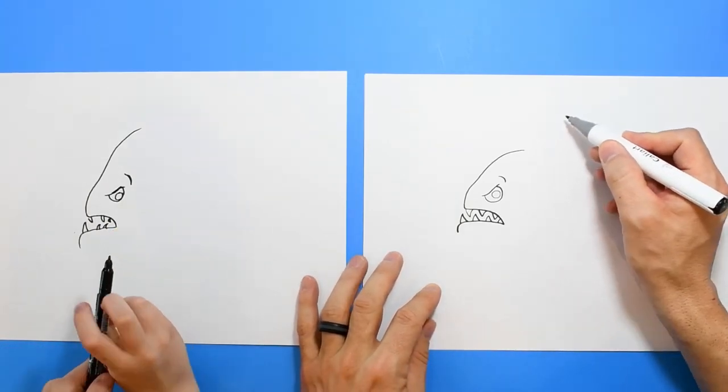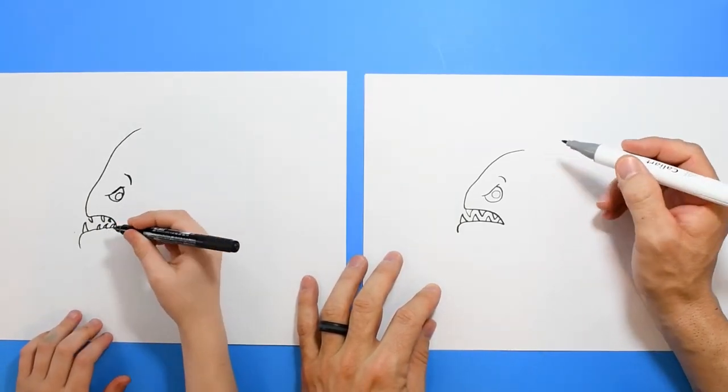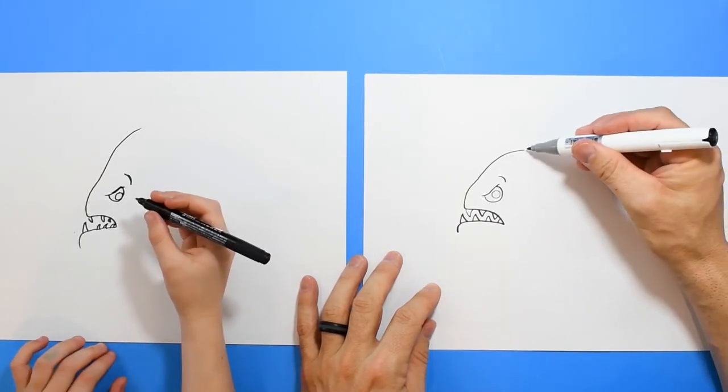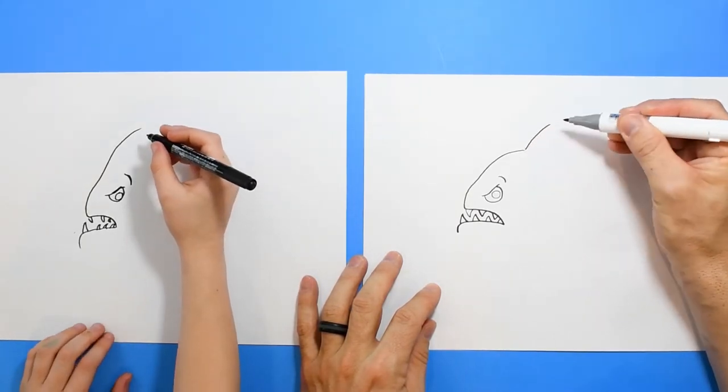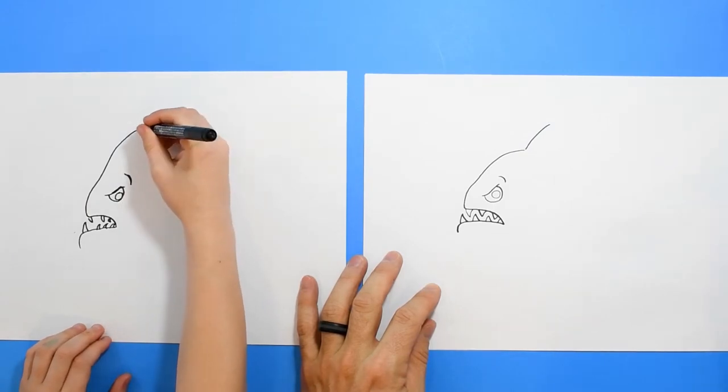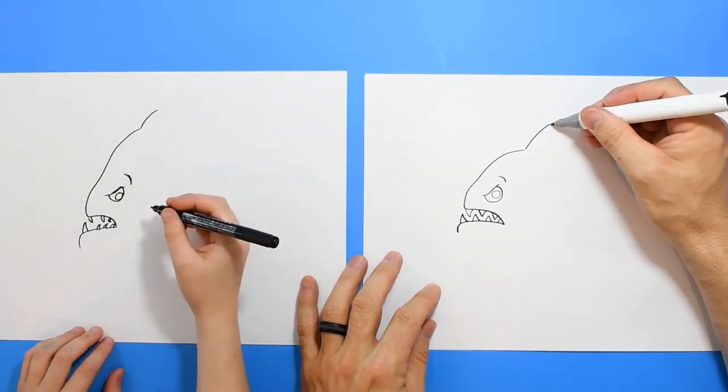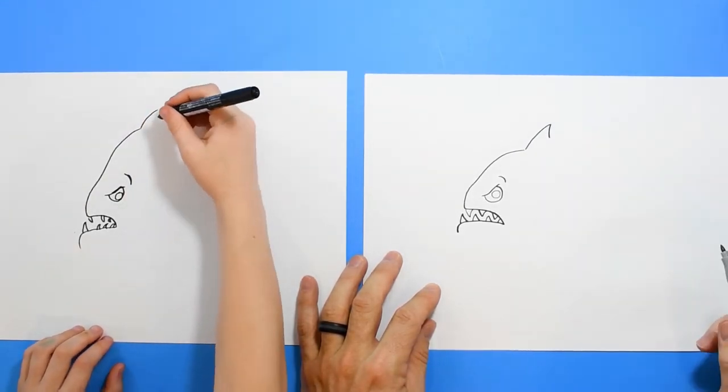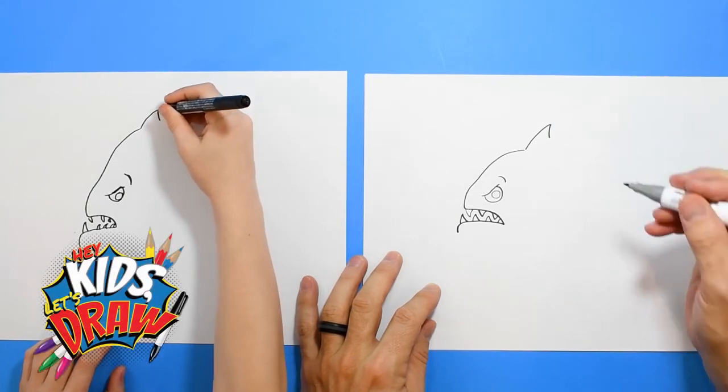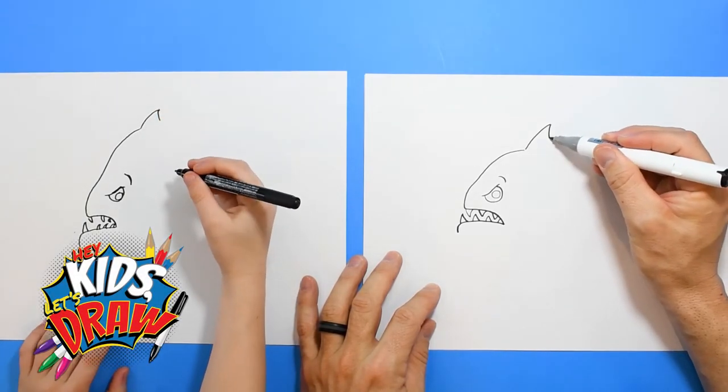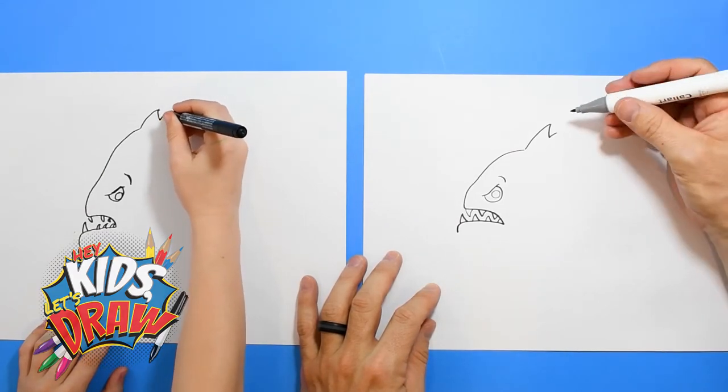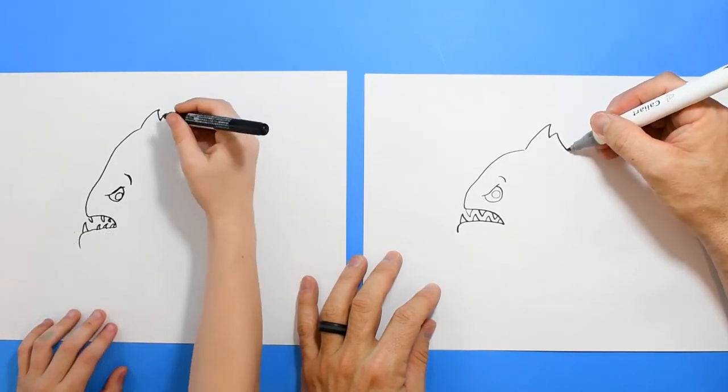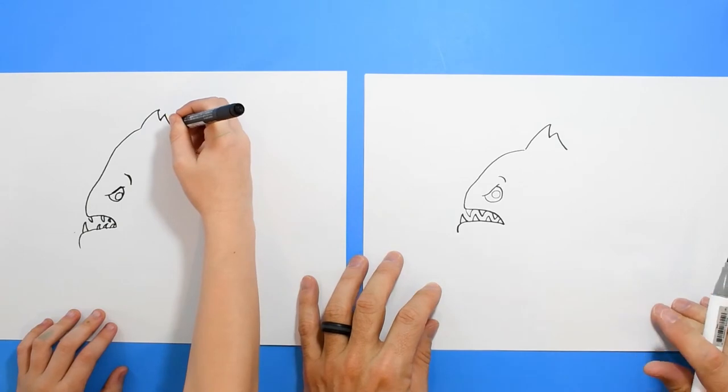All right. So what's on top of the piranha here? A fin. A fin, right? Let's do a sharp fin. We'll do up. Up. And then we'll come back.